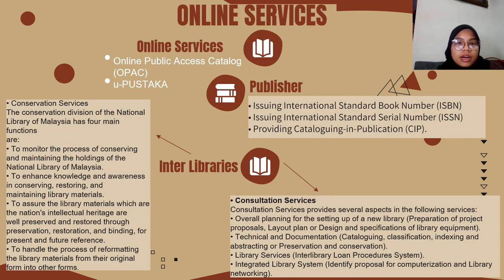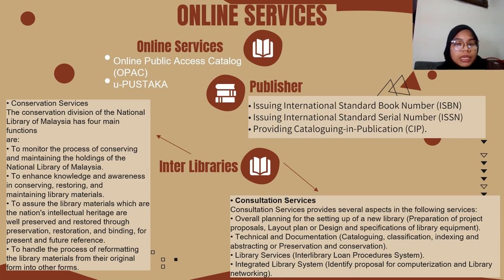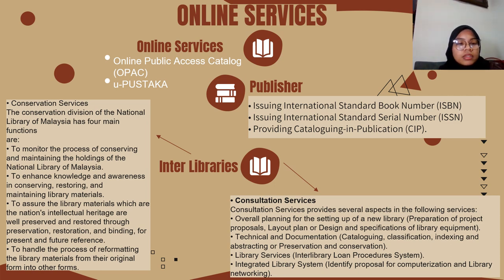For online services, there are two main offerings: OPAC and uPustaka. OPAC is a web-based online catalog used to search for books or other items in the library collection. uPustaka, the ubiquitous library portal, was developed by the National Library of Malaysia — online borrowing and membership registration are both free on the uPustaka website. The publisher services include issuing the International Standard Book Number (ISBN), issuing the International Standard Serial Number (ISSN), and providing Cataloging in Publication (CIP). Inter-library services include conservation services and consultation services.